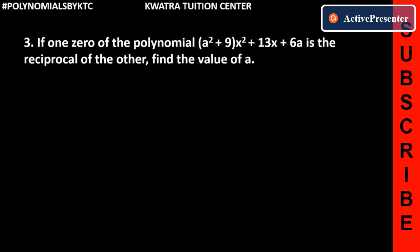Hello everyone, let's start with question number 3. It says, if one zero of the polynomial (a² + 9)x² + 13x + 6a is the reciprocal of the other, find the value of a.